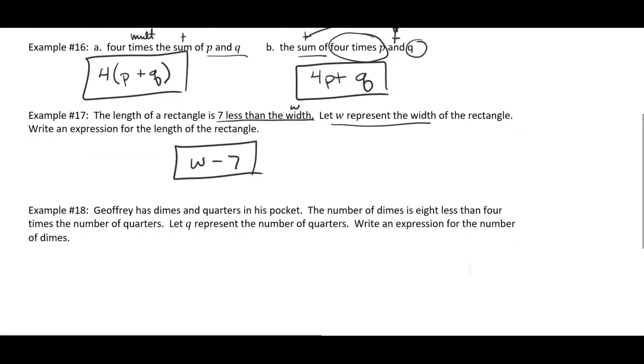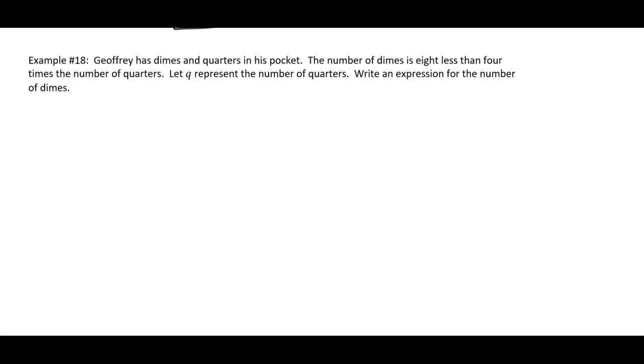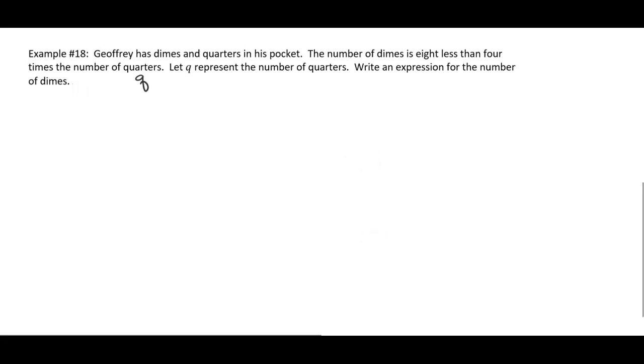Example 18. Jeffrey has dimes and quarters in his pocket. The number of dimes is eight less than four times the number of quarters. Let q represent the number of quarters. So again, q is going to be the number of quarters. Now we have to write an expression for the number of dimes. So it says the number of dimes is, okay, now this is the part where we're going to start. Eight less than, so something minus eight. Eight less than, less than what? Four times the number of quarters. Well, how would you represent four times the number of quarters? If q is the number of quarters, then you want four times q. 4q. And we don't need that squiggly line, but 4q - 8 then. That would represent the number of dimes. It's eight less than four times the number of quarters.